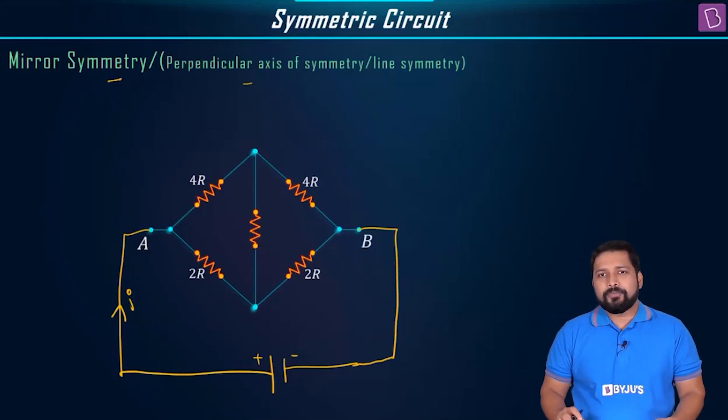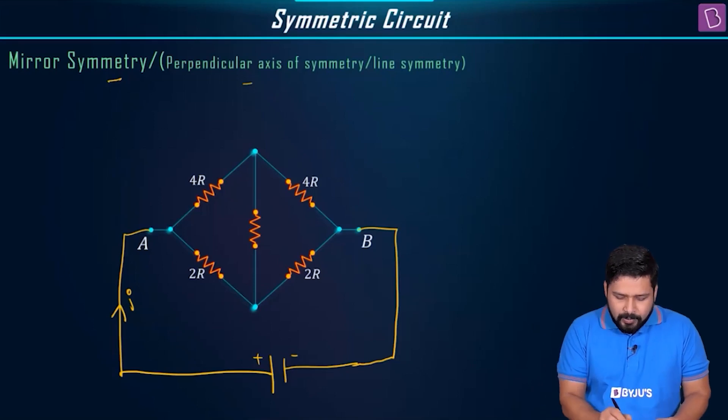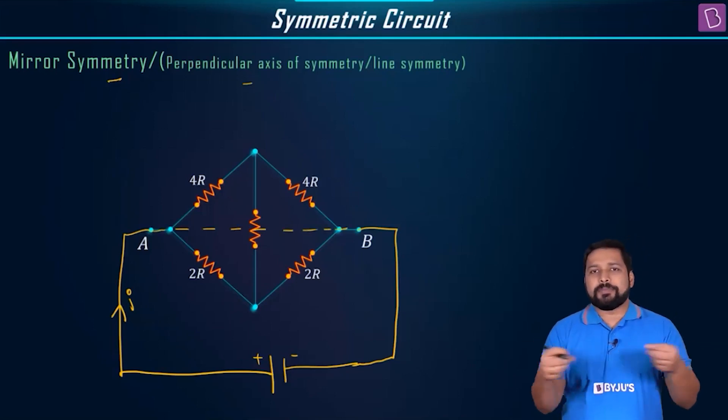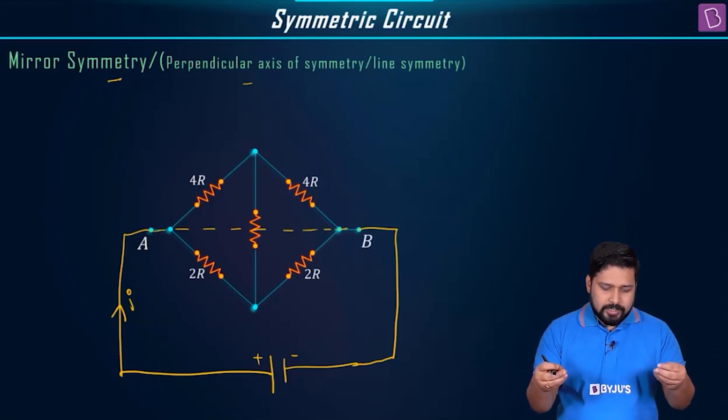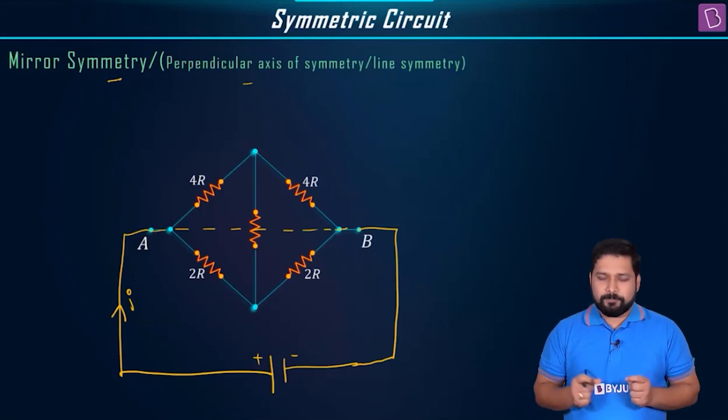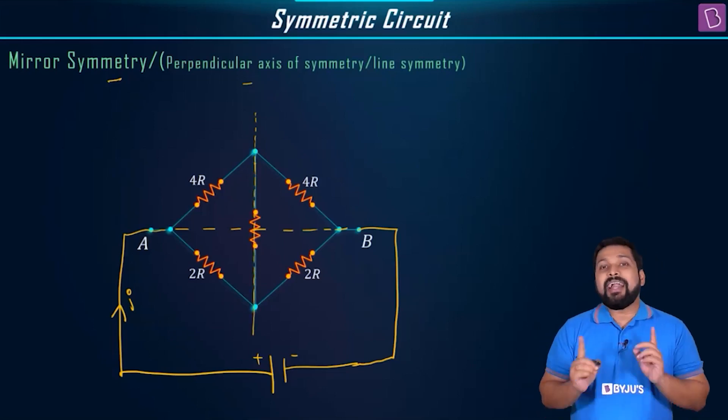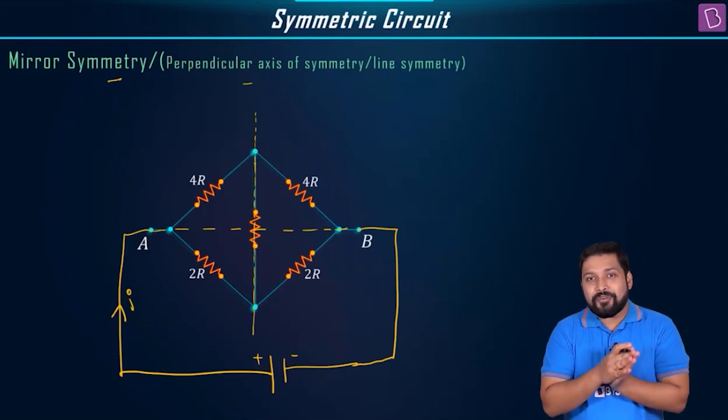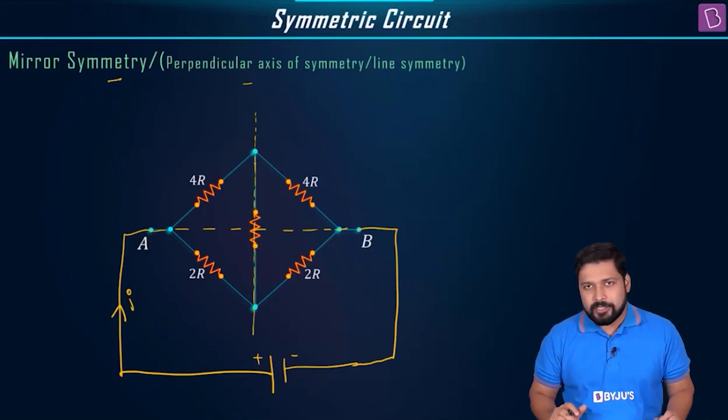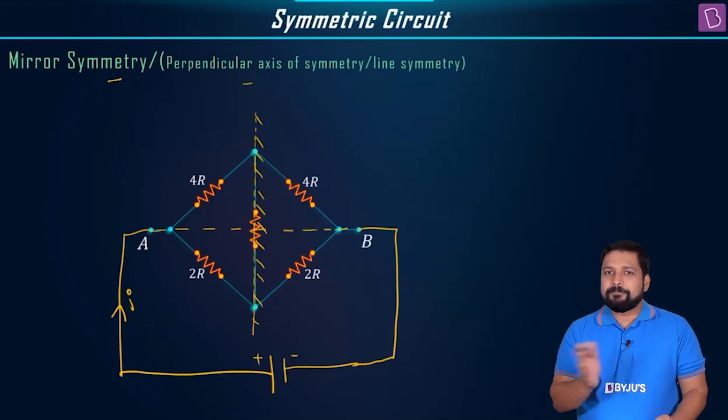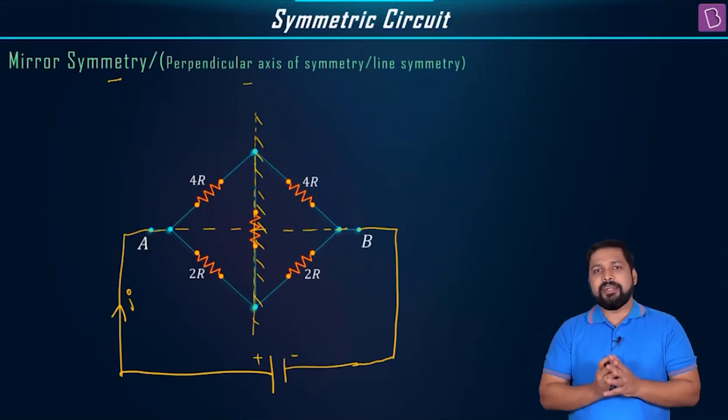What is the first thing that you do? First is that understand that we'll be joining A and B like this. This is called as the axis. Perpendicular to this line will be our perpendicular axis. This will be perpendicular to the line and in such a way that you have an exact symmetry on either side of the circuit.